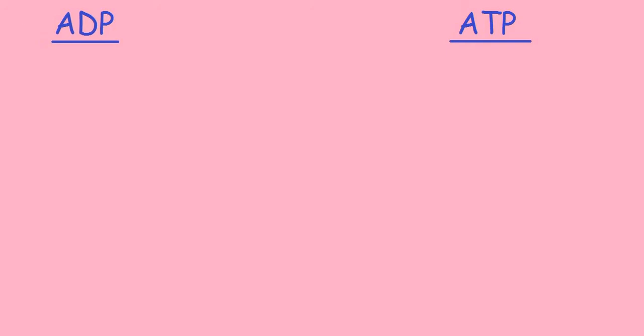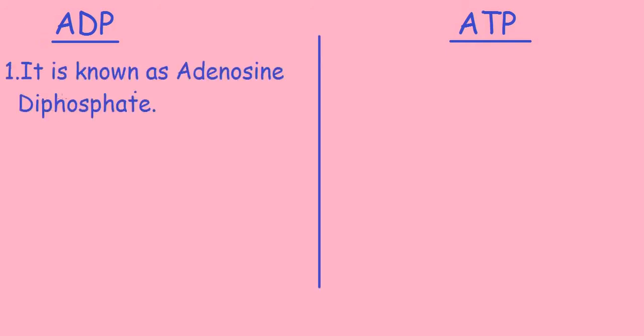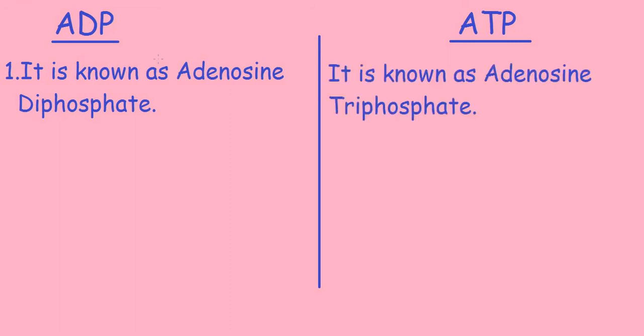Let's study the differences between ADP and ATP. The first point: ADP is also known as adenosine diphosphate, and ATP is known as adenosine triphosphate.